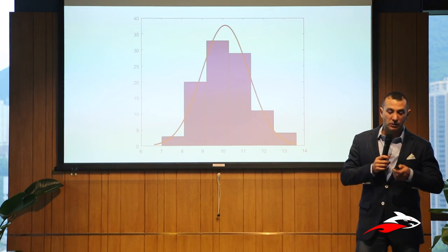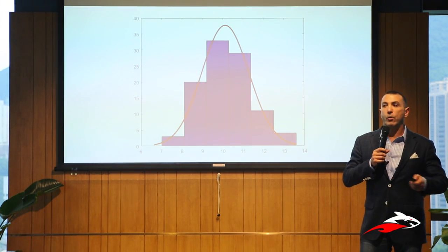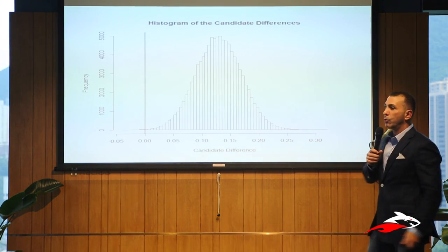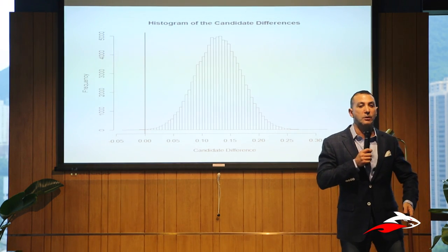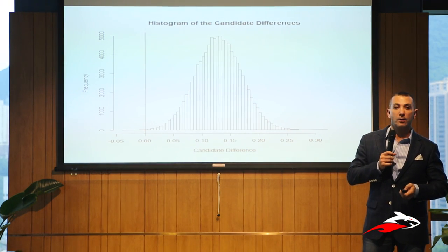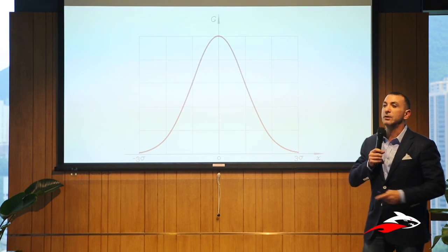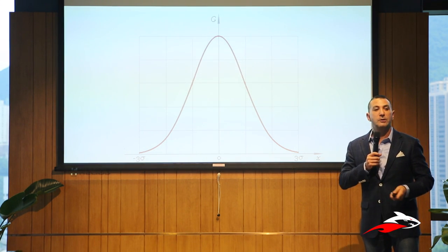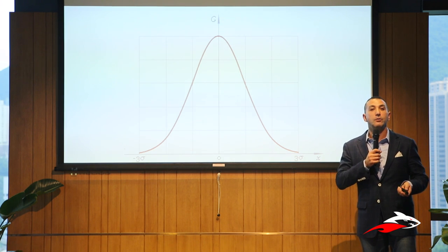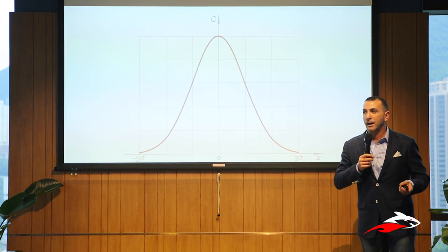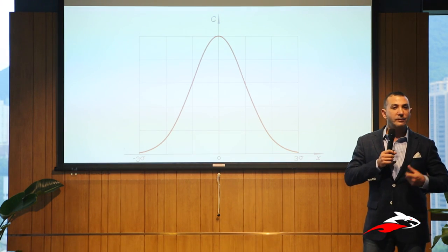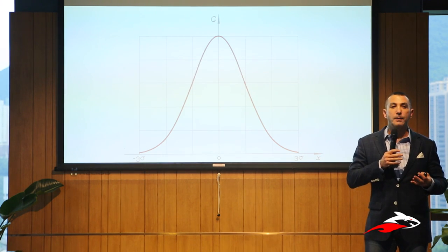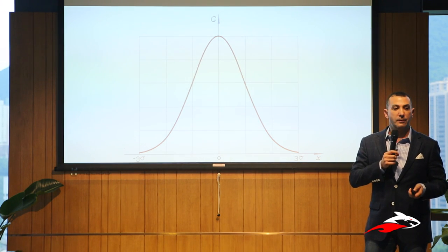If we polled everybody in Hong Kong, you might get a much wider distribution, and the bins get smaller and smaller. At some point, if you do that enough, you just get a curve. That's the point of this exercise — we start thinking about probability as what we call a distribution. There are a bunch of curves like this that have standard names and shapes, and they describe different kinds of random behavior.